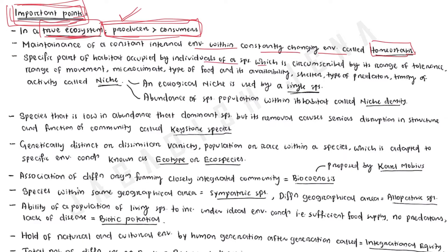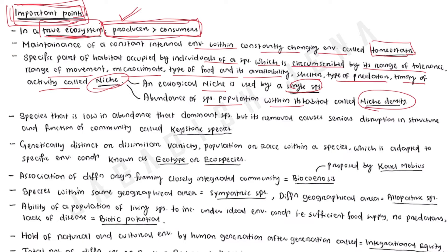The specific part of a habitat occupied by individuals of a species, circumscribed by its range of tolerance, range of movement, microclimate, types of food and availability, shelter, types of predators, and timing of activity, is called a niche. An ecological niche is used by a single species. The abundance of a species population within its habitat is called niche density. Keystone species is the species that is low in abundance but dominates, and its removal causes serious disruption in the structure and function of the community.